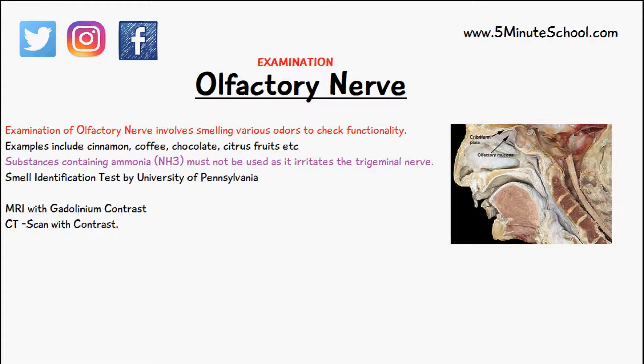Other tests you can use include an MRI scan with gadolinium contrast — the gadolinium helps to enhance the quality of the image. If the patient is suspected of having some kind of bony lesion in this area, or if an MRI isn't available, you can also use a CT scan with a contrast medium added as well.